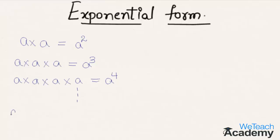When a is multiplied itself for m times, we can write this as a to the power m, where a is the base and m is the exponent.